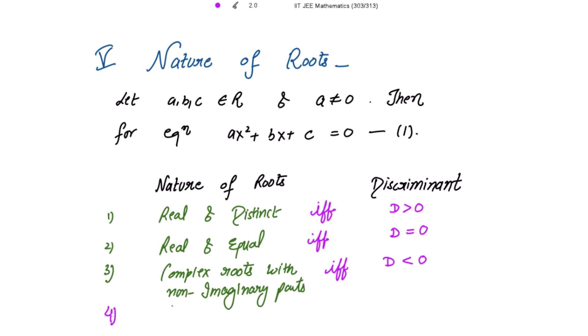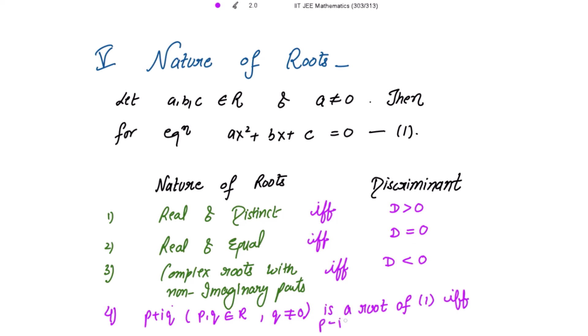One more point: the complex number p + iq, where p and q belong to the real numbers and q is non-zero, is a root of equation 1 if and only if p − iq is also a root of equation 1. So complex roots always come in conjugate pairs — this is true in both directions.